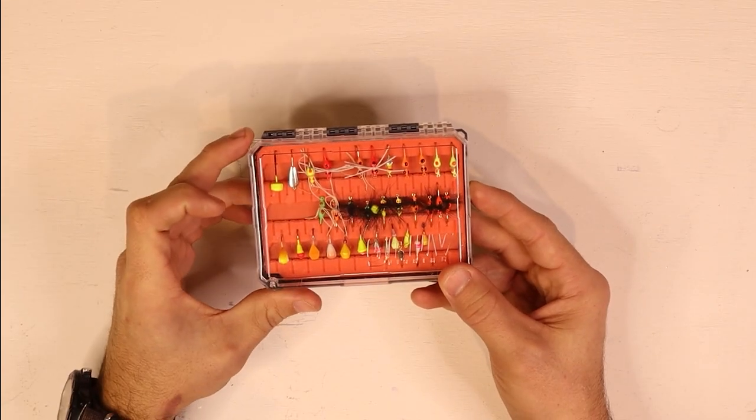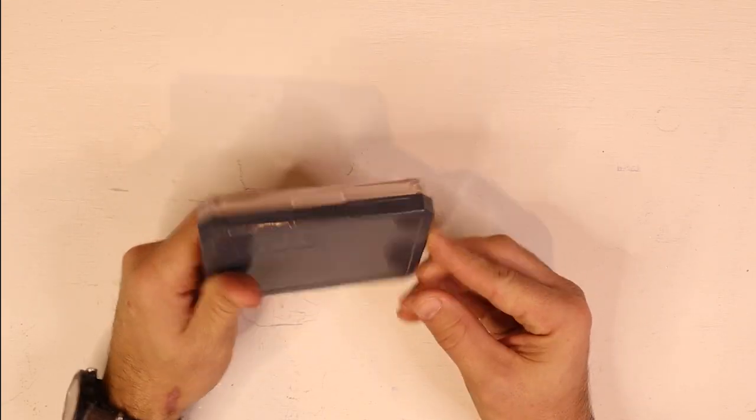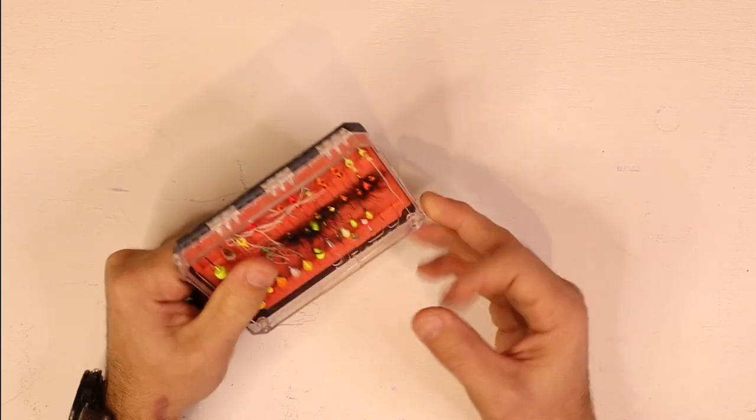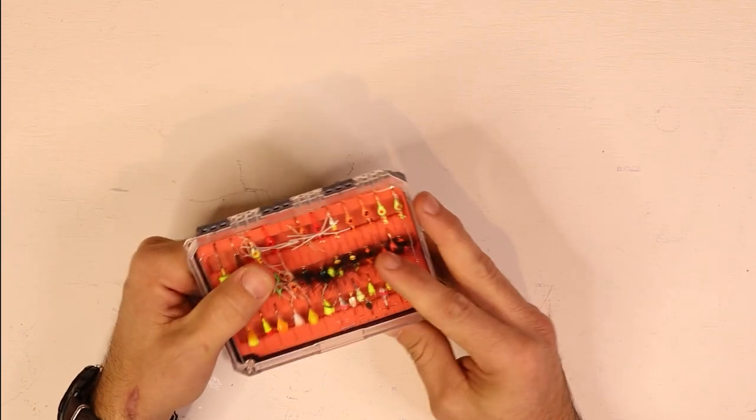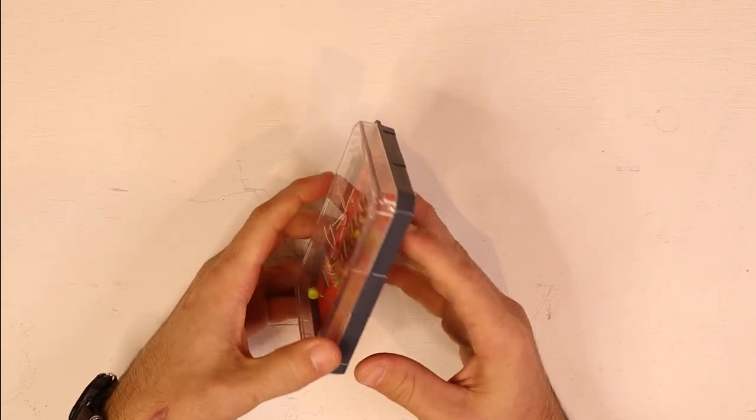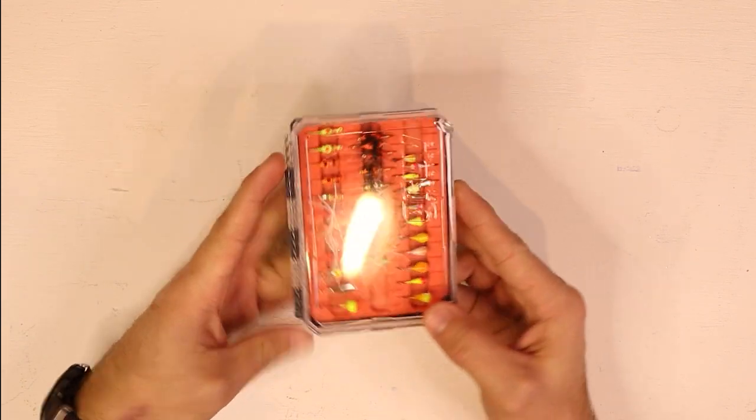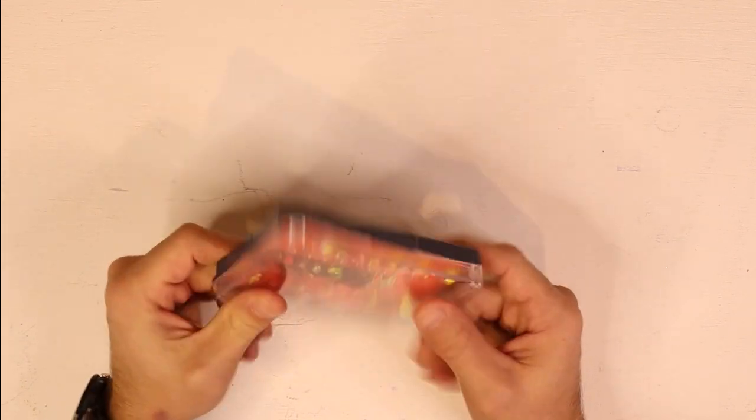Some of the features: a polycarbonate shell, same type of material they make bulletproof vests and bulletproof glass out of, so it should be strong, durable, long lasting, and nearly indestructible.